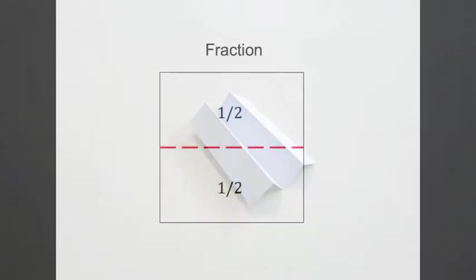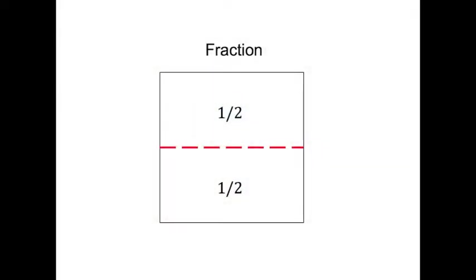Did you realize the math in the folding? The valley fold divided the square into two equal parts. Each part is one half. The two halves add up to square one. This is a basic concept of fraction.